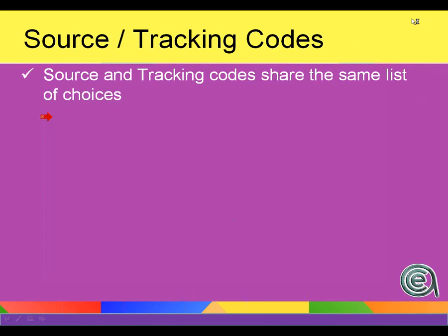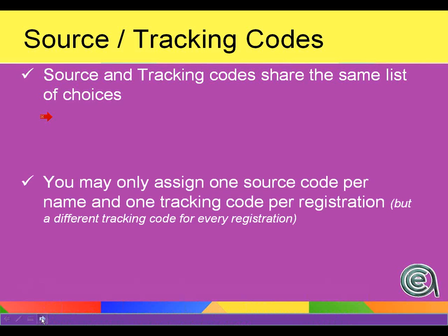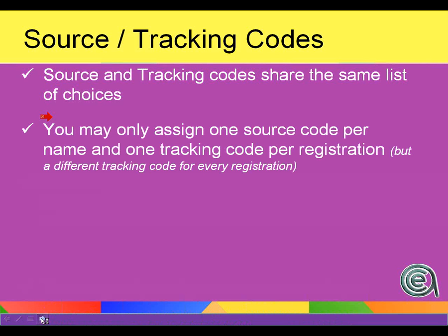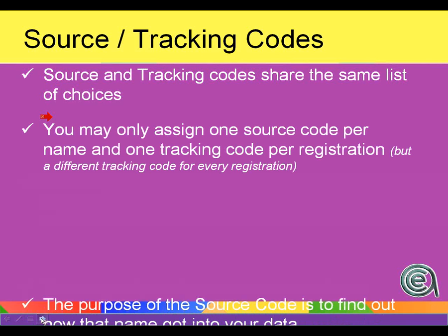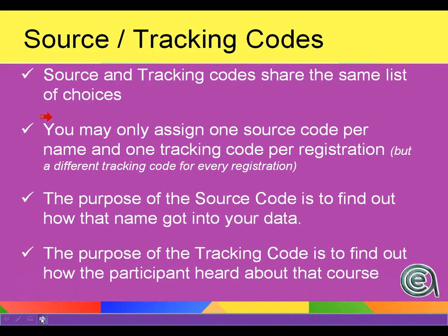The same list of choices for source and tracking codes — we'll cover that when we start to edit the codes themselves. One source code per name, one tracking code per registration.